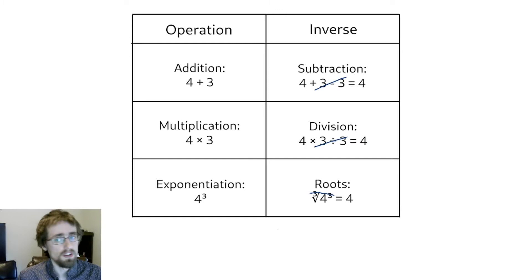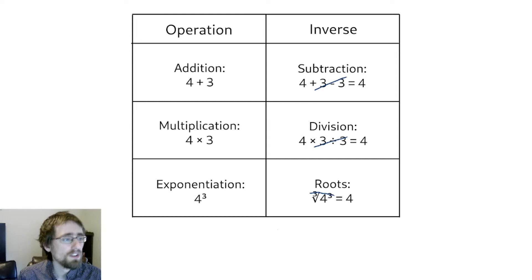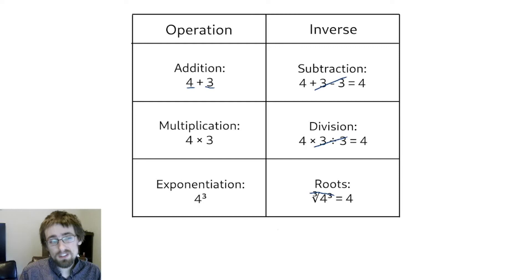So where do logarithms fit in all of this? This table is a bit misleading — it suggests that each operation only has one inverse. But if you think carefully, each operation acts on two numbers, so there are potentially two inverses: one to cancel the number on the right, and one to cancel the number on the left. The inverses we found cancel the number on the right, so these are called right inverses.